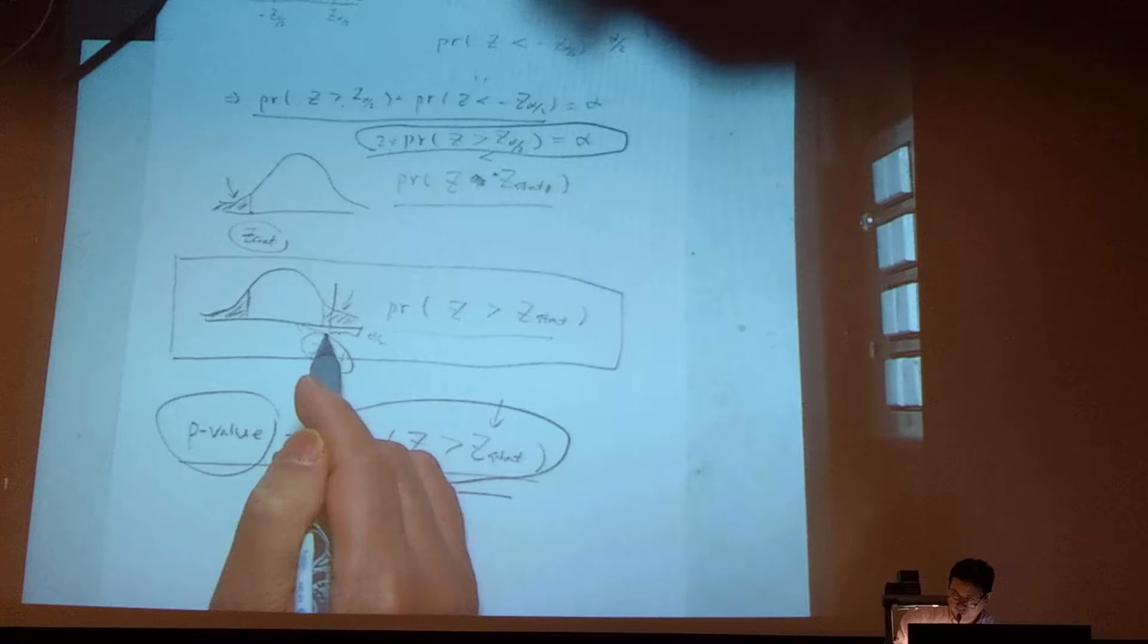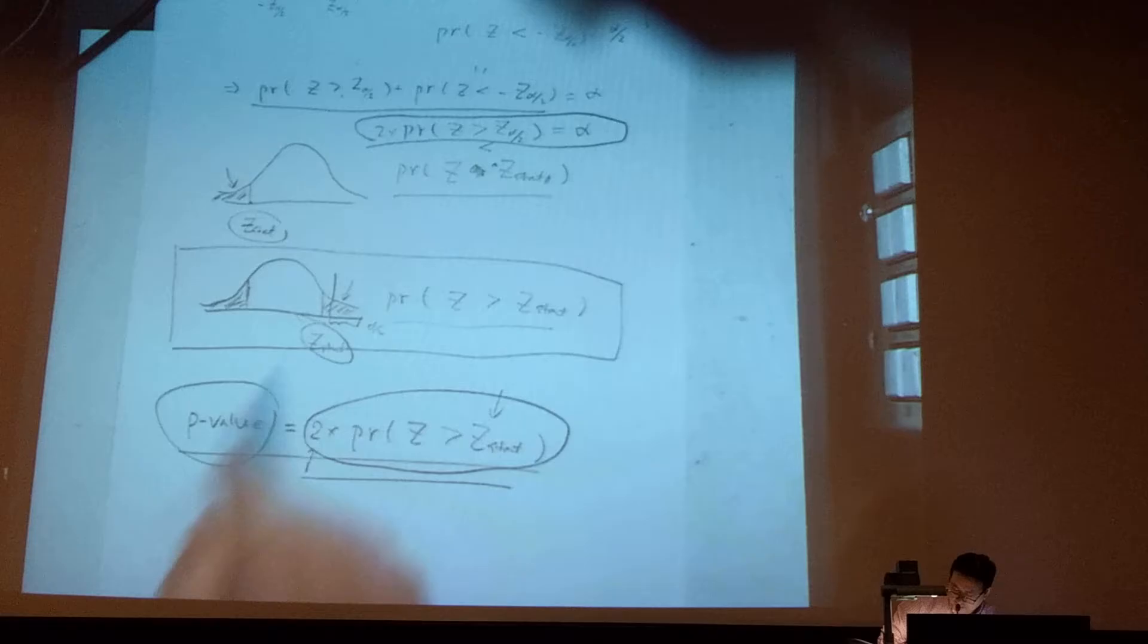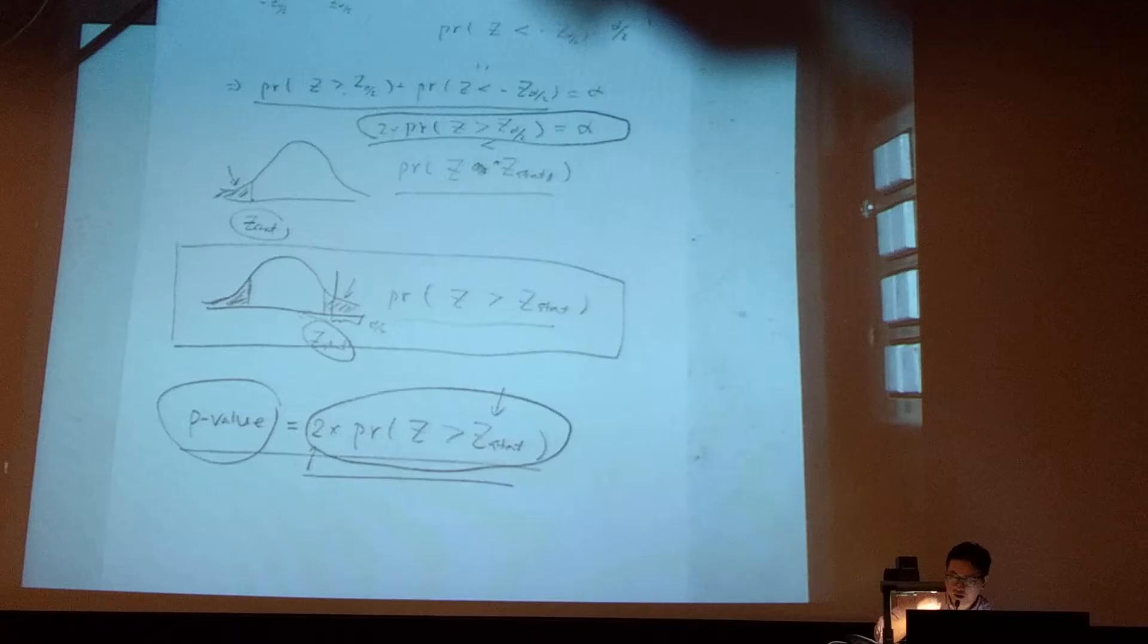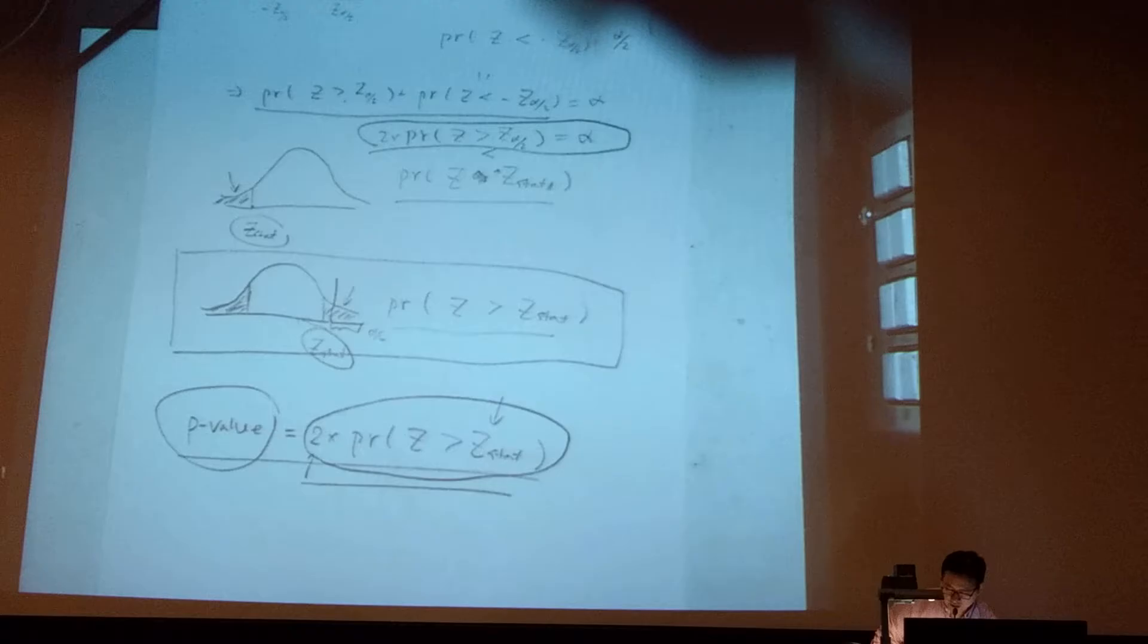So whenever you actually have the P-value bigger than the alpha, then of course we definitely will have the Z statistics to what? To more close to the center, which is smaller than the critical value. So this is the only case that we can have the P-value bigger than the alpha.